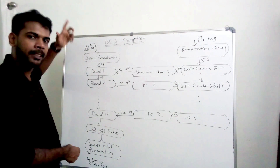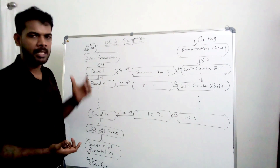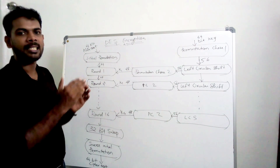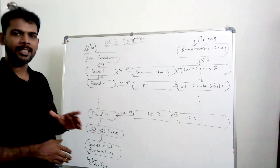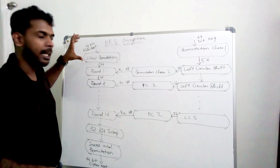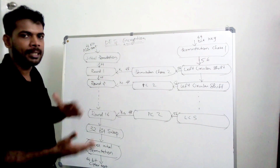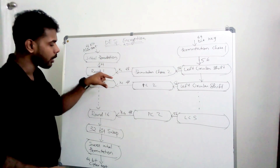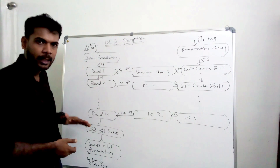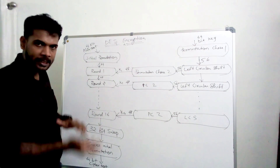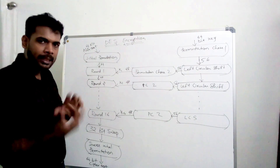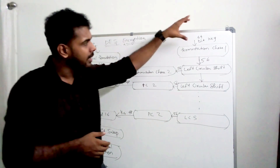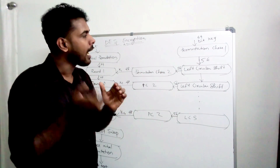After the 16 rounds, there is a 32-bit swap, followed by the inverse of the initial permutation. The output of this inverse initial permutation is 64-bit ciphertext. So the DES flow is: 64-bit plaintext → initial permutation → 16 rounds → swap → inverse initial permutation → 64-bit ciphertext.